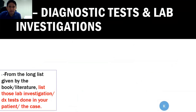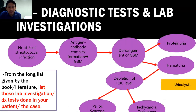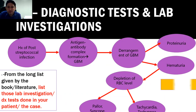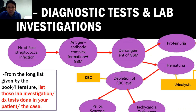For diagnostic tests and laboratory investigations, you attach them to the relevant findings. For example, hematuria and proteinuria can be confirmed using urinalysis, and depletion of red blood cells can be verified using a complete blood count. You affix the diagnostic test to the corresponding manifestation in your pathophysiology track, using different shapes or colors to distinguish them.